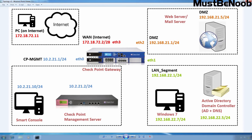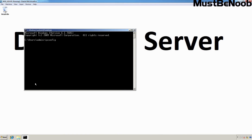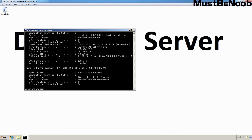This is our internal web server which I have placed in DMZ. On this virtual machine, I have already installed and configured IIS web service. The assigned IP address to this virtual machine is 182.168.21.5. I want that users from the internet can access this web server with the help of manual NAT. As you can see, the IP address is 182.168.21.5 with the gateway's IP address 192.168.21.1 and the DNS server's address 8.8.8.8.